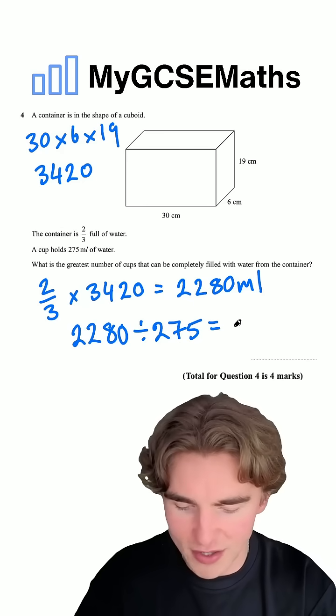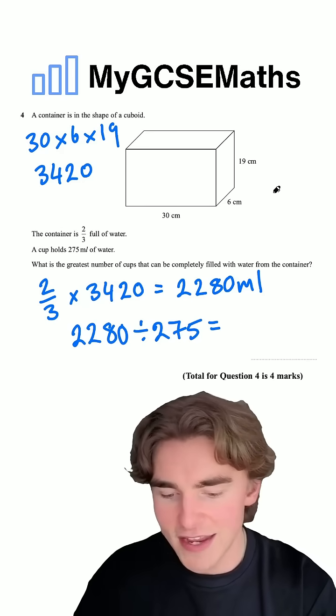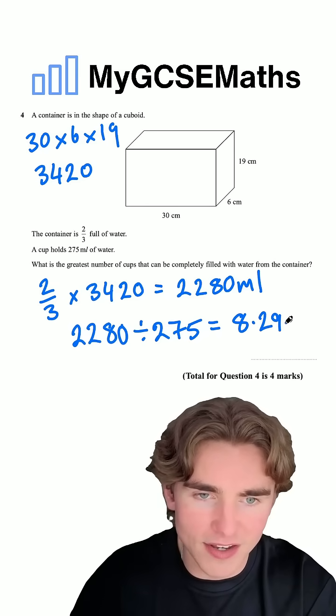Working this out, what's it going to be? 2,280 divided by 275, it's going to give us 8.29, 8.29 et cetera.